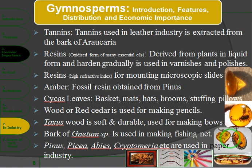Leaves are also used for stuffing pillows. Wood of red cedar is used for making pencils. Taxus wood is soft, durable and used for making bows and also for 'teer' (arrows). Stems of Gnetum are used for making fishing nets, being fibrous and durable. Pinus, Picea, Abies, and Cryptomeria are used in the paper and pulp industry.